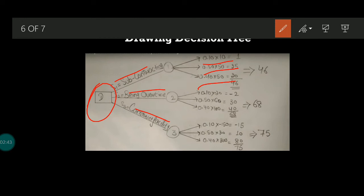When you add them you get a value. When you add all these again, you calculate and add, you get 68. The same thing whatever we did for the EMV, you just pictorially represent them.